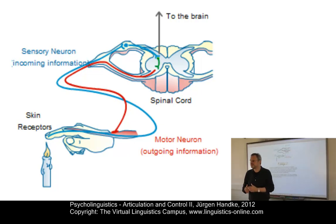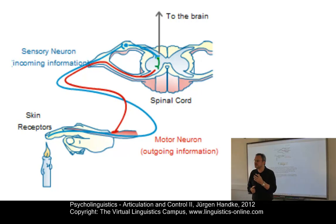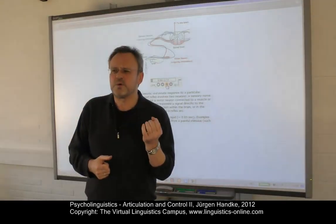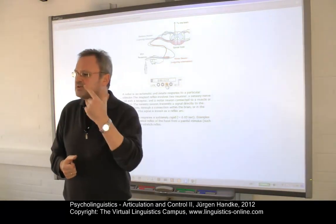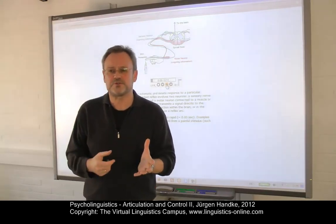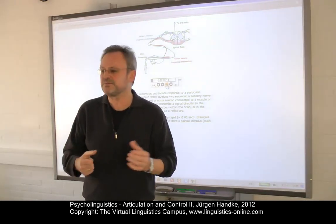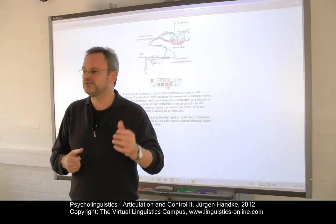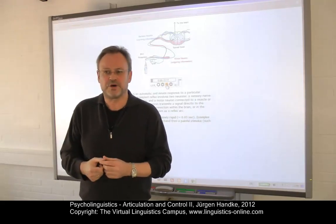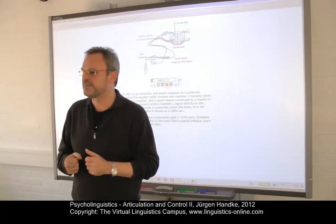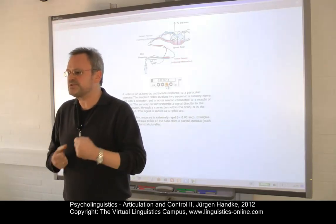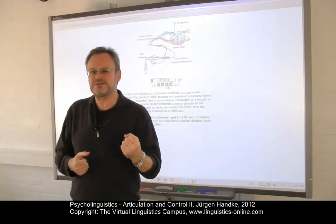Even though articulatory activities are normally subconscious and are thus reflex-like, they can be made conscious. For example, we can control the position of the tongue — we know where the tongue is in a 'D', we can feel it. Or we can control the state of the glottis — something like creaky voice. Or the position of the velum by producing nasalization. So in other words, speech must involve some sort of non-reflexive type of feedback.